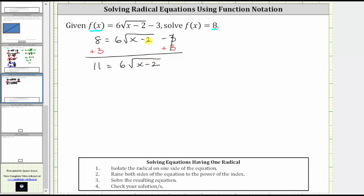And now to isolate the square root, we divide both sides by 6. On the left, we have 11/6 equals, on the right, 6 divided by 6 simplifies to 1, and we have √(x - 2).